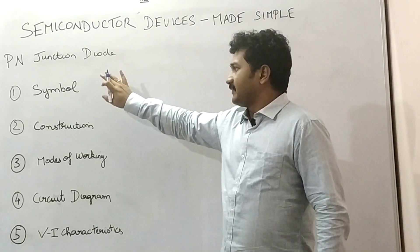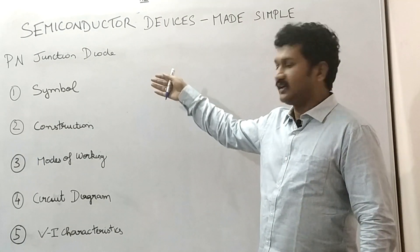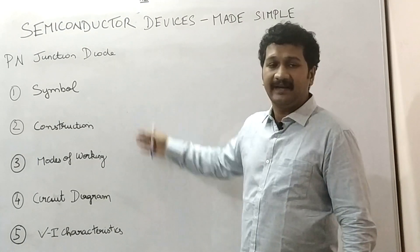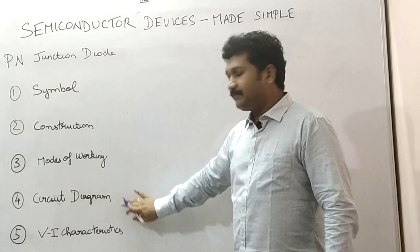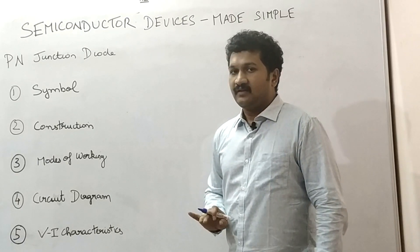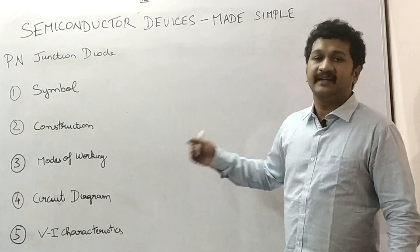In this lecture, I am splitting up the explanation of PN junction diode into five main parts: Symbol, Construction, Modes of Working, Circuit Diagram and VI characteristics. This will be easier for understanding and analyzing a PN junction diode.